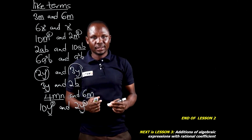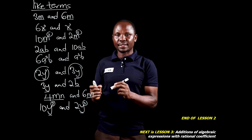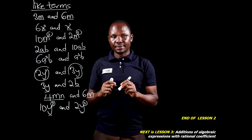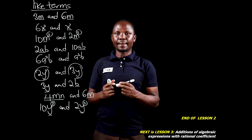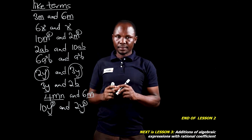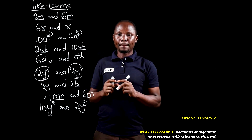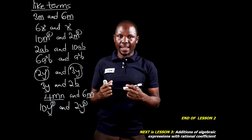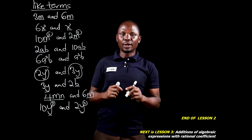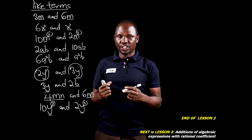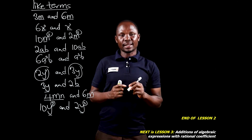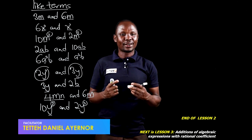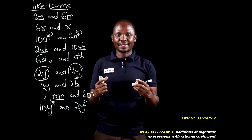In this lesson, we studied about like terms and unlike terms. For terms to be like terms, the variables must be the same and they must have the same exponents. If the variables are the same but they do not have the same exponents, then they are unlike terms. Like terms can only differ with their coefficients. In our next lesson, we will study additions of algebraic expressions with rational coefficients. See you in the next lesson.